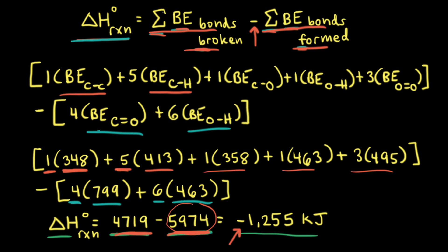If the sum of the bond enthalpies of the bonds that are broken is larger than the sum of the bond enthalpies of the bonds that are formed, we would get a positive value for the change in enthalpy, and that would be true for an endothermic reaction.